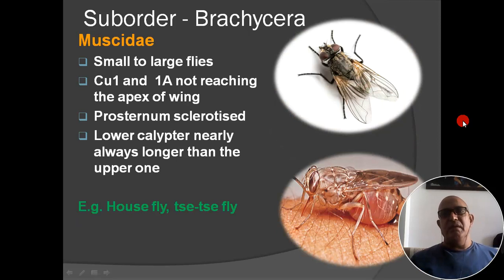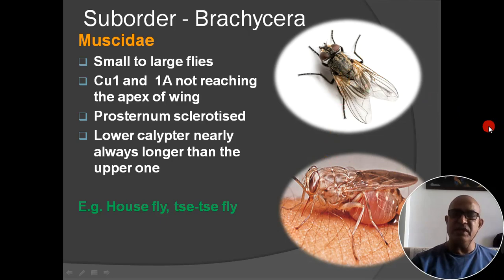Next family: Muscidae. Small to large sized; cubitus first and first anal not reaching apex of wing; prosternum sclerotized; lower calypter nearly always longer than upper one. Examples: house fly and tsetse fly. The house fly is shown here, and the tsetse fly acts as a carrier and vector of disease.